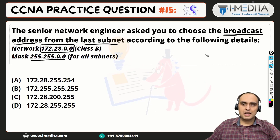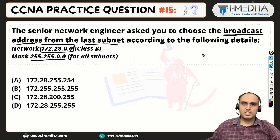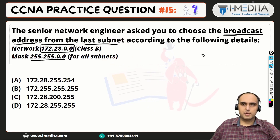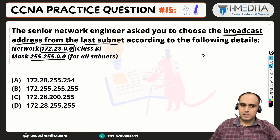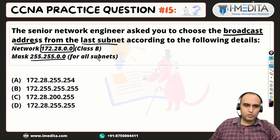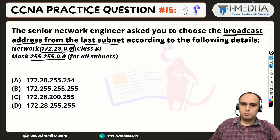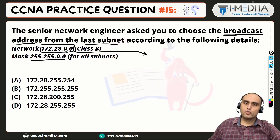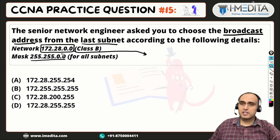The broadcast address is the last address of our network, and it is not a host-assignable address. We use it when we want to communicate within the subnet. By definition, the broadcast address has all the host portion bits set to ones.